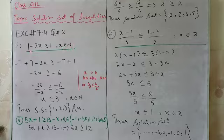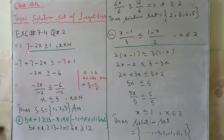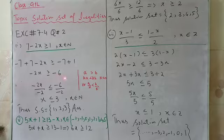To find the solution set of this inequality, we will subtract 7 from both sides. By subtracting 7, we have minus 7 plus 7 minus 2x is greater than or equal to minus 7 plus 1. We get minus 2x is greater than or equal to minus 6.